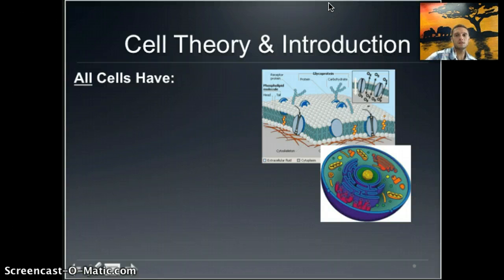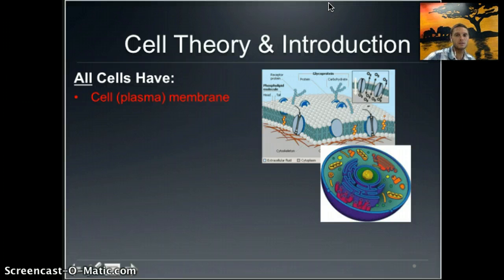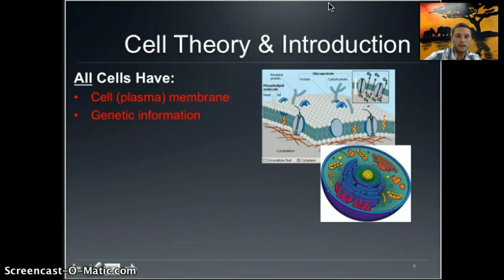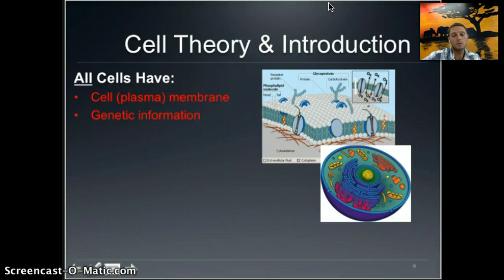There are a couple of things that all cells have. The first is some sort of plasma membrane, which helps create an internal environment that can be different from what's outside of the cell. The second thing all cells must have is some sort of genetic information — primarily DNA. In eukaryotic cells the DNA is enclosed within a nucleus; in prokaryotic cells the DNA is free-floating within the cell, but all cells have some genetic information.